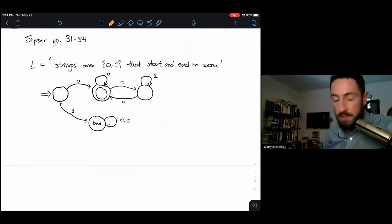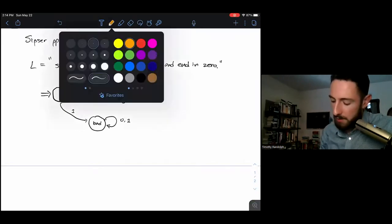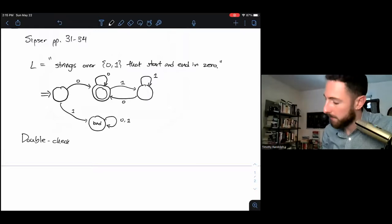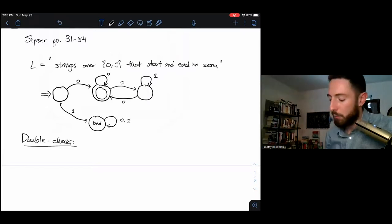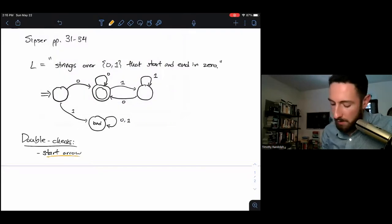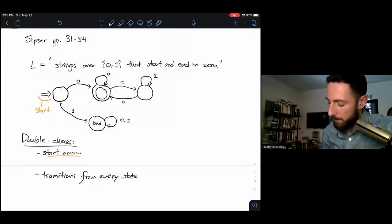Let's go over how to read and check it really quick. Here's our list of double checks. Before I say yes, this is a DFA that does what I want it to do, I've got to make sure of the following. It's got to have a start arrow, which yes, it does. We've got a start arrow.